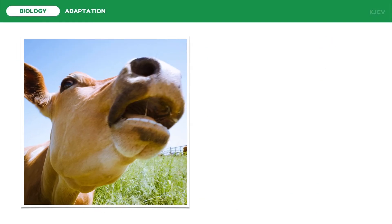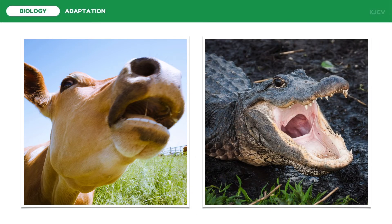Teeth of organisms have also evolved based on their diet. Herbivores like cows have molars that are essential for chewing grass — it is more fit for cows to have these compared to sharp teeth like those in carnivores. Carnivores like crocodiles and alligators have sharp teeth adapted to chew on their prey, which is tougher compared to the diet of herbivores.